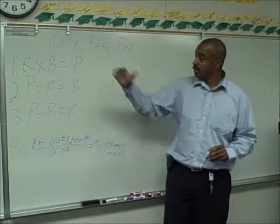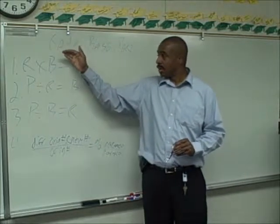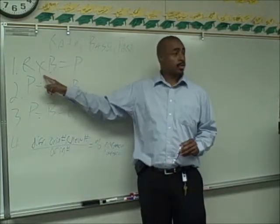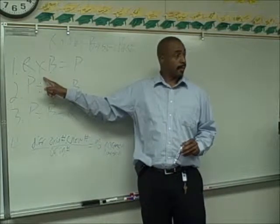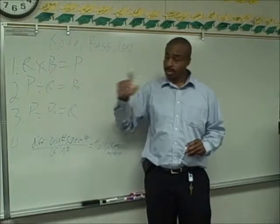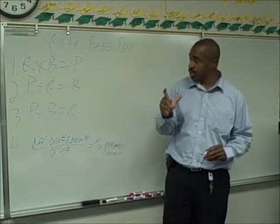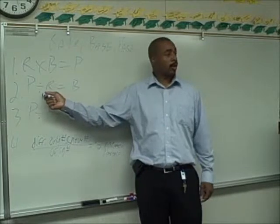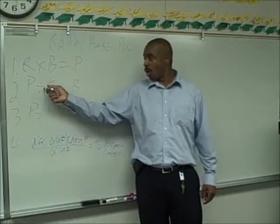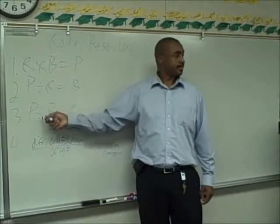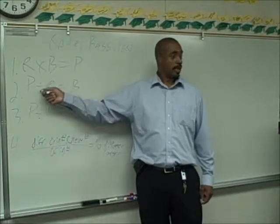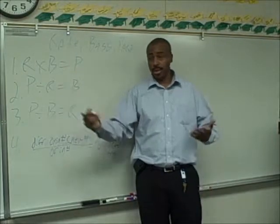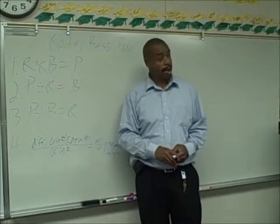Let me help you. If you have the rate and the base, you're always multiplying — you're just multiplying the two numbers that you have. If you have the part, you are always dividing — dividing by the other number that's there in the problem.